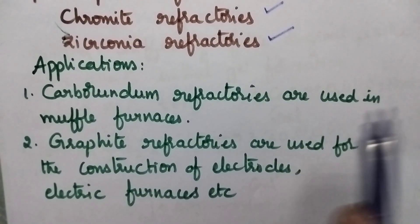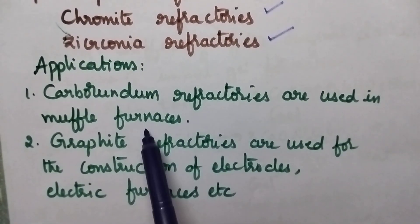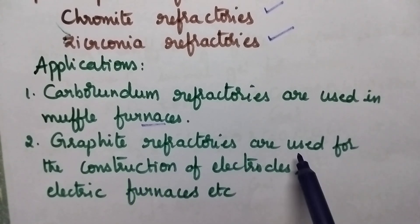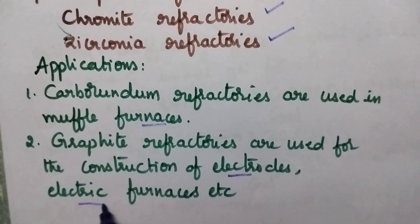Coming to the applications, carborundum refractories are used in muffle furnaces, whereas graphite refractories are used for the construction of electrodes and electric furnaces.